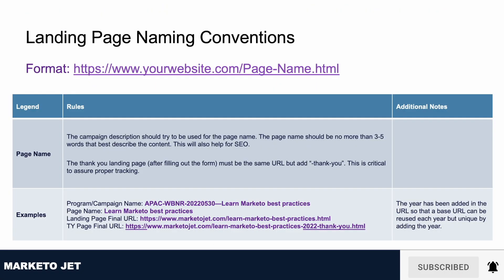It is a good idea to have a very similar rule for landing pages. You should remove all unnecessary text from your landing page URL. For example, your URL should contain only your domain name and the program description. Remove things like the region, program type, and date from the landing page URL, as this will help you rank in SEO. Similarly, for thank you pages, you should add 'thank you' at the end of the landing page URL so that when reporting, you can easily exclude thank you pages.